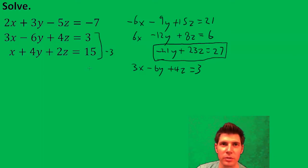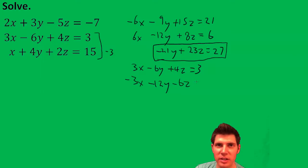So the top one was left alone and I multiply by negative 3. Negative 3x minus 12y minus 6z equals negative 45. Now when I add these together, this cancels negative 18y minus 2z equals negative 42.